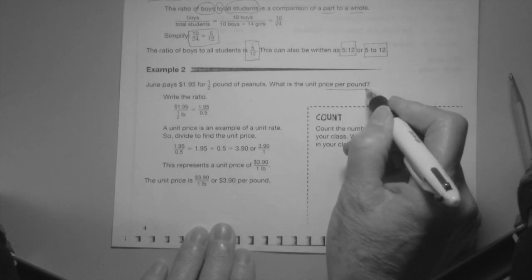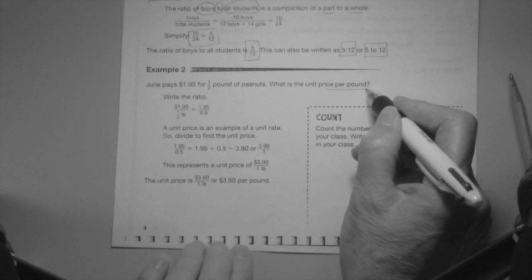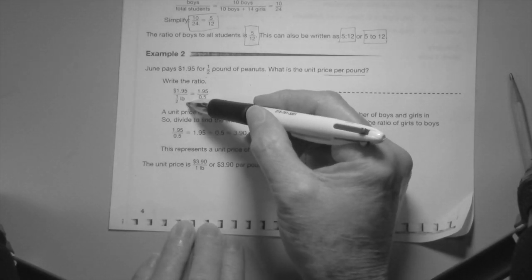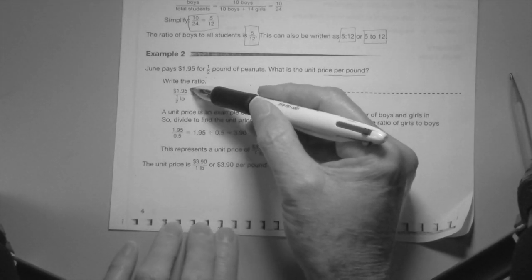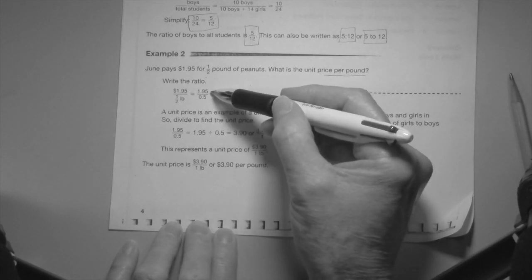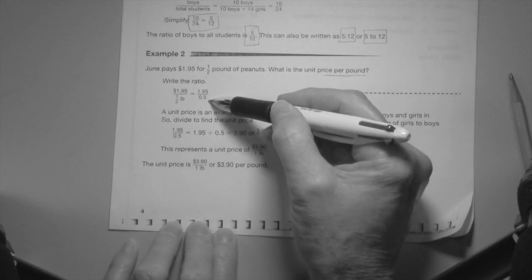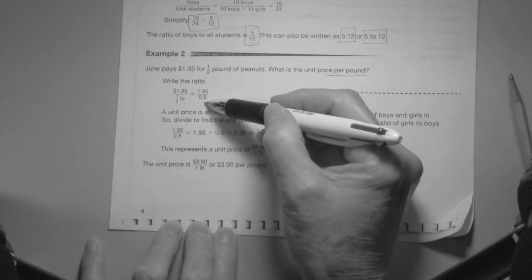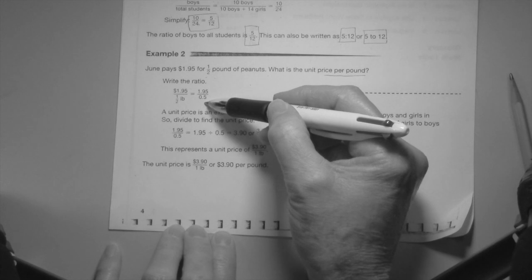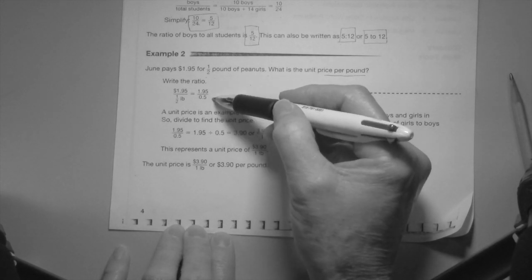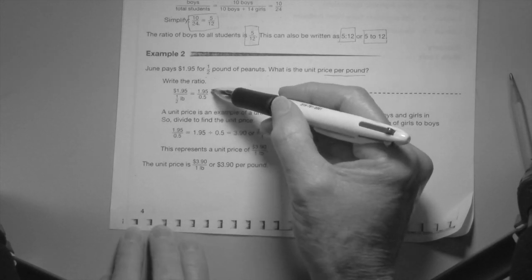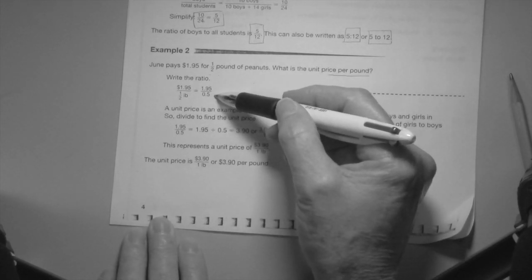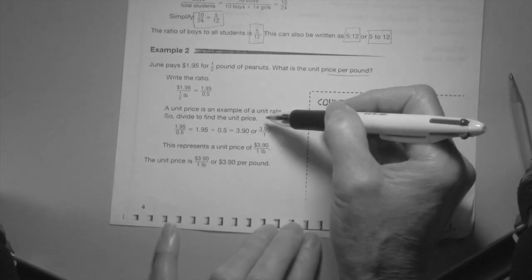June pays $1.95 for half a pound of peanuts. What is the unit price per pound? $1.95 for half a pound, notice how it's set up like a fraction. $1.95 over a half a pound equals $1.95 over 0.5. We went from a fraction form of one half, made it into a decimal. You'd like to work with same type of units, either decimal form or fraction form. Definitely decimal is easier.